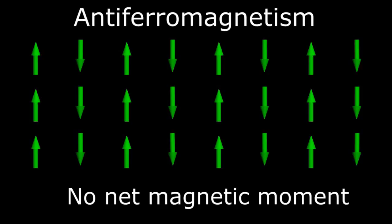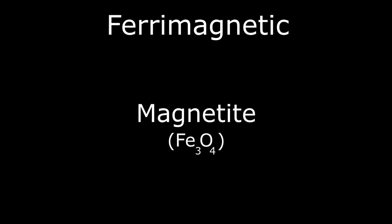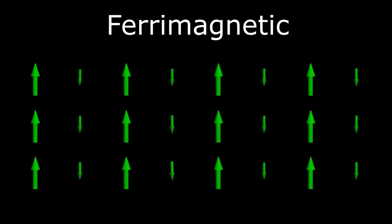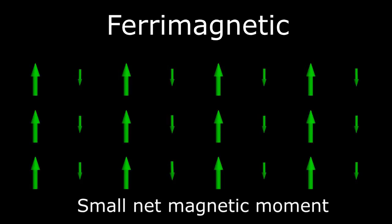This phenomenon is called antiferromagnetism. Ferromagnetic molecules such as magnetite, a form of iron oxide, exhibit a similar phenomenon, but the alignment is asymmetric, providing a small net magnetic moment. So, that was a pretty thorough review of electron orbital configurations and magnetism. We hope it was enlightening. If you have any questions, post them and we'll get to them as soon as possible. Thanks for watching.